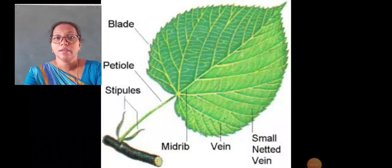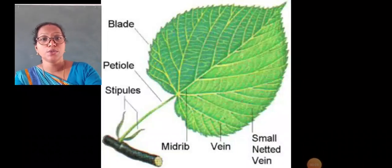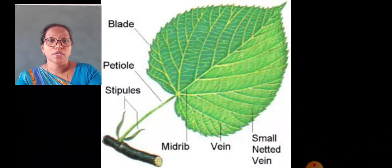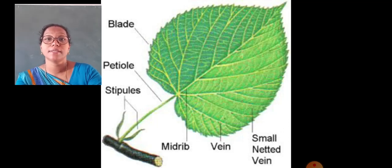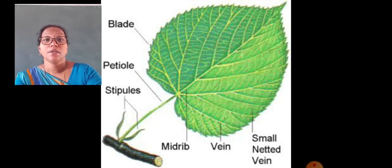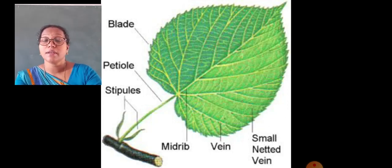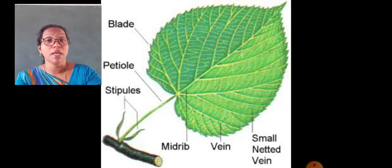Dear students, in this video we are going to study about the structure of a leaf. Leaves are of different types, different sizes, different shapes, but they are very important. They are the structures present in a plant that look green in color, that make the plants the most distinguished among the other living beings.